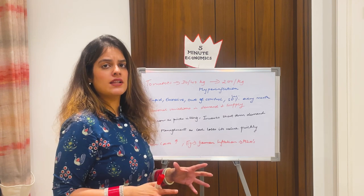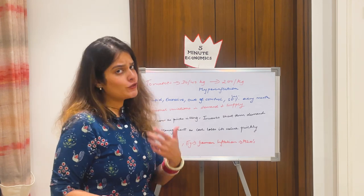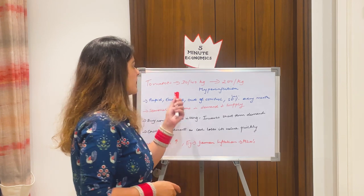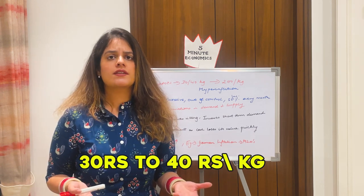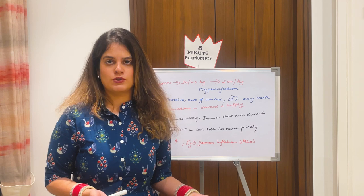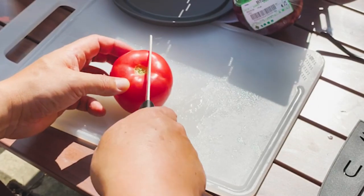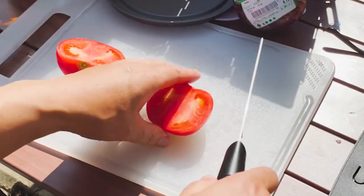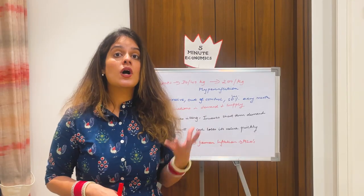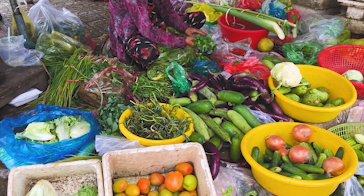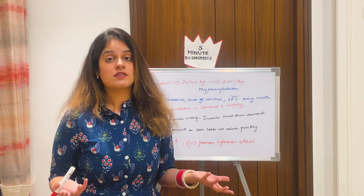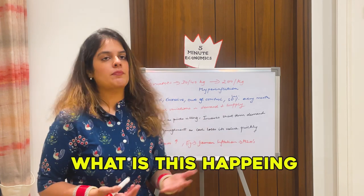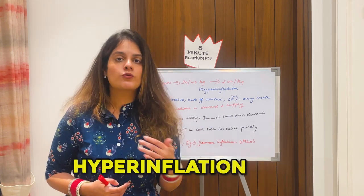Let me introduce what is actually happening in the economy. If you've ever gone to a vegetable vendor, you might know that the price of tomatoes basically ranges from 30 to 40 rupees a kg. Tomato is an essential good which we put in most of our vegetables and dishes. And now the price of tomatoes has reached 200 rupees a kg. One kg of tomato — a bare necessity — has seen its price increase so much. This is known as hyperinflation.